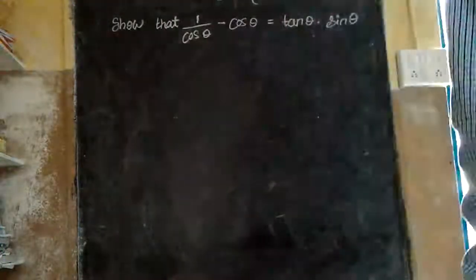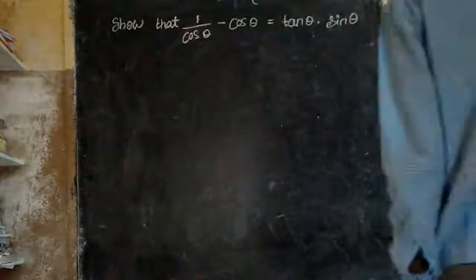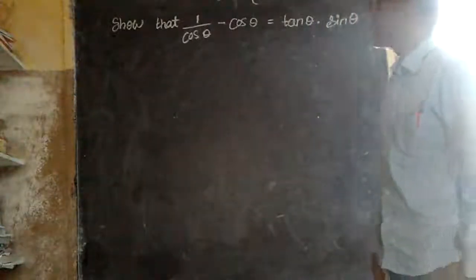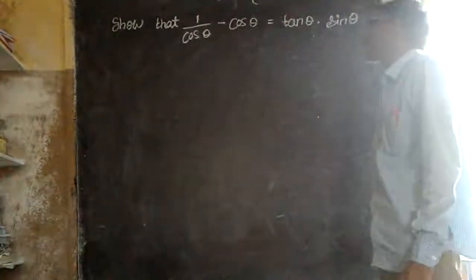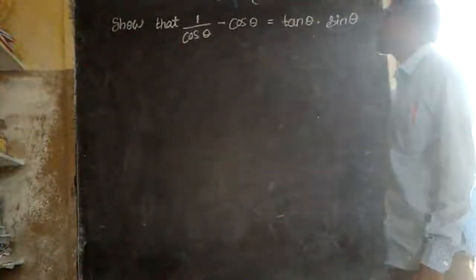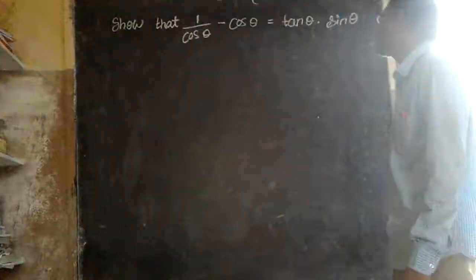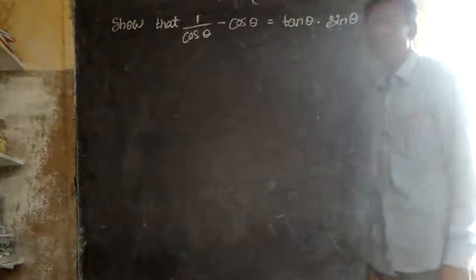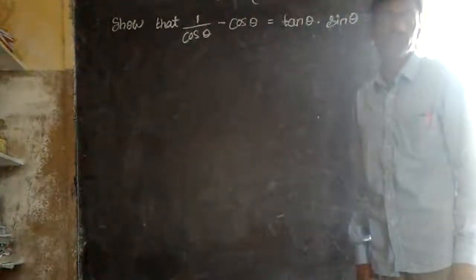Look at the board. We have to show that 1 by cos theta minus cos theta is equal to tan theta into sin theta.